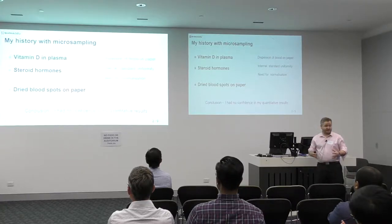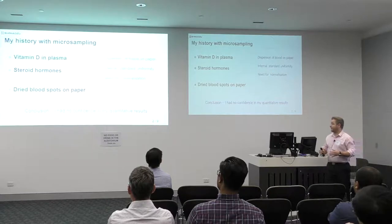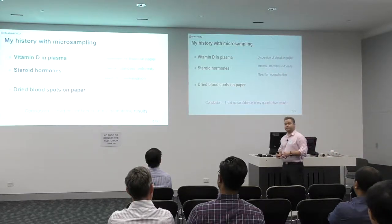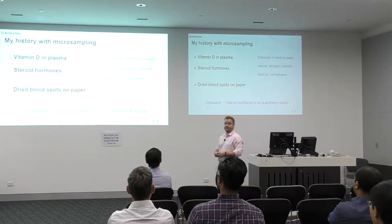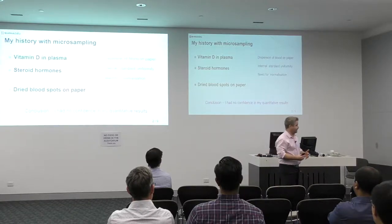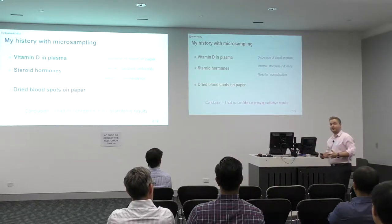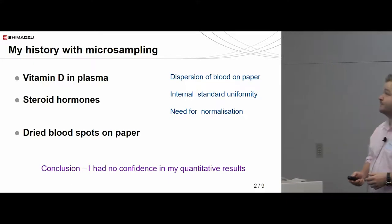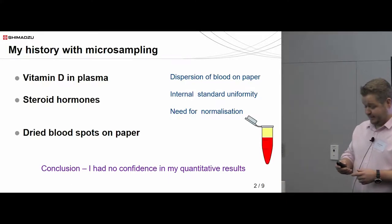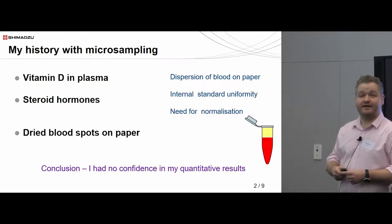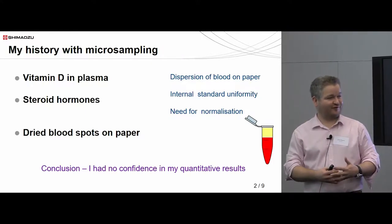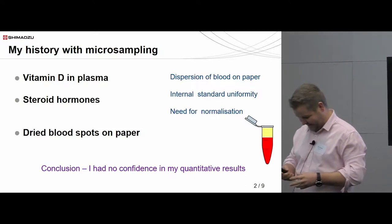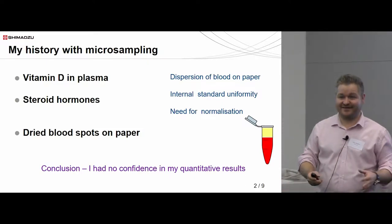When I looked at the challenge, I made a conclusion that I had no confidence in my quantitative results, because the brief for this project was absolute quantitation with a perfect correlation towards a plasma sample. I decided after some trial and error it was pretty much impossible. This was confirmed last night when I was talking to somebody, and they said how lucky they were when they got a plasma sample rather than a dried blood spot. Just about everybody in the room agrees that plasma is pretty straightforward and dried blood spots are difficult.